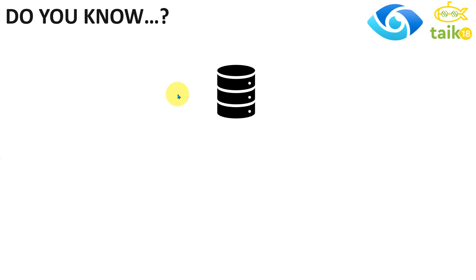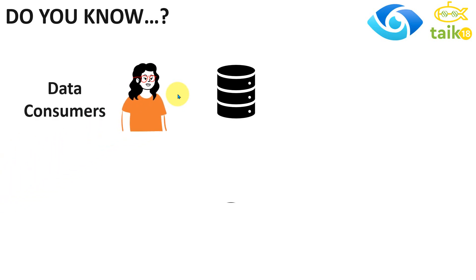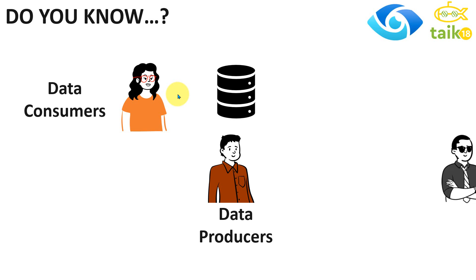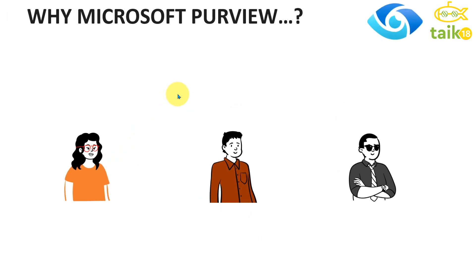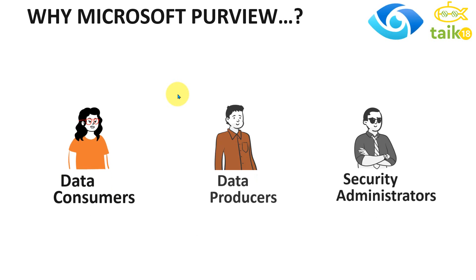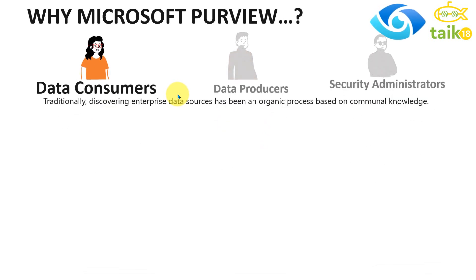When it comes to data, there are three kinds of people. There are data consumers and data producers, and the third one is the security administrators. All these people need to collaborate together in order to consume the data, produce the data, and govern the data. There are a few challenges for these people when it comes to managing the data, and we'll discuss those here and find solutions for them.